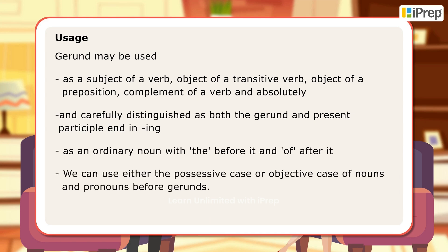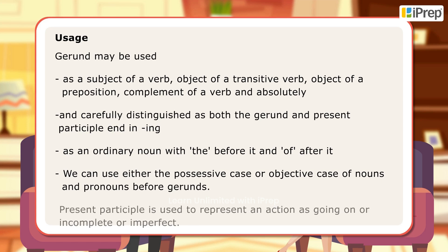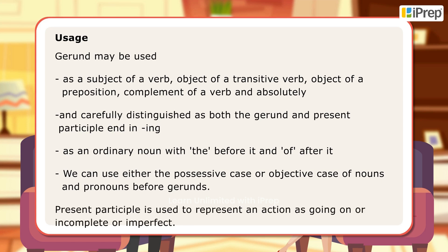We can use either the possessive case or objective case of nouns and pronouns before gerunds. Present participle is used to represent an action as going on, or incomplete, or imperfect.